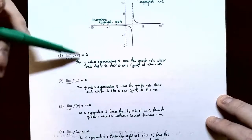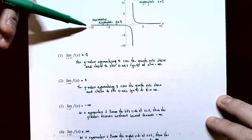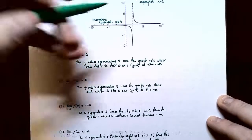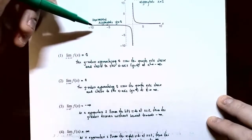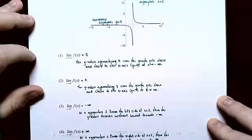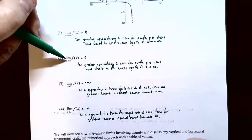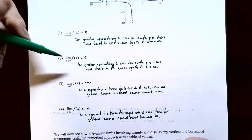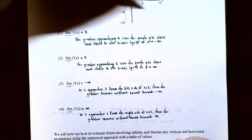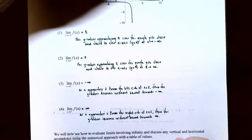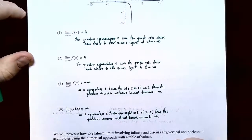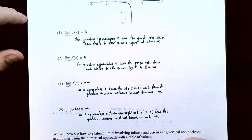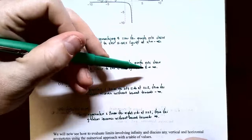As we go toward the far left end of the graph, the y values appear to approach the x-axis, getting close to zero. So the limit as x approaches negative infinity is zero — the graph gets closer and closer to the x-axis. Similarly, for the limit as x approaches positive infinity, looking at the far right end of the graph, the graph again approaches the x-axis, so the limit equals zero.